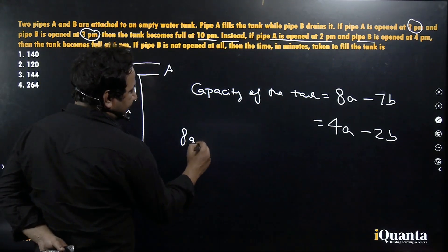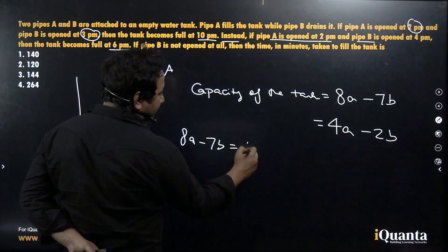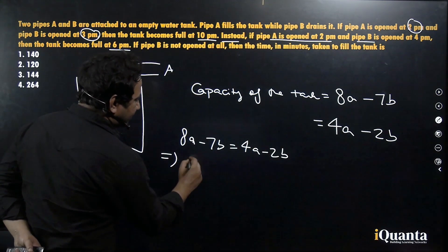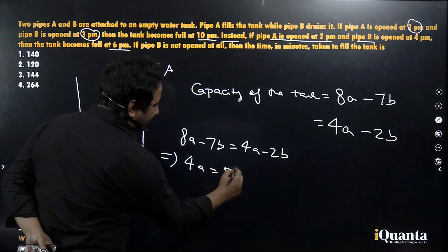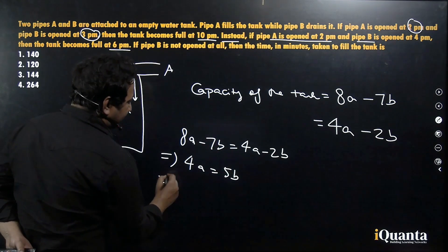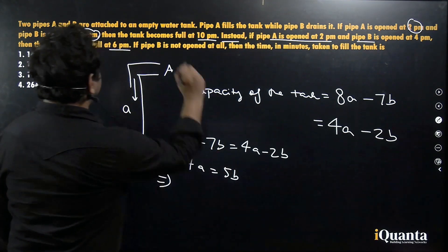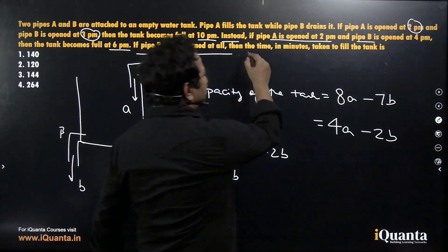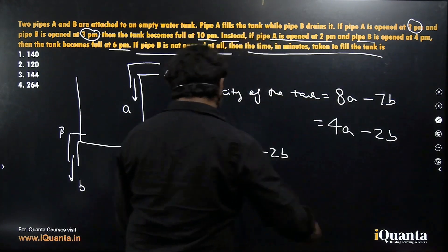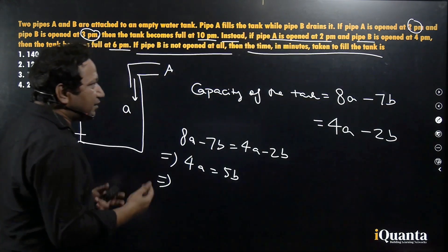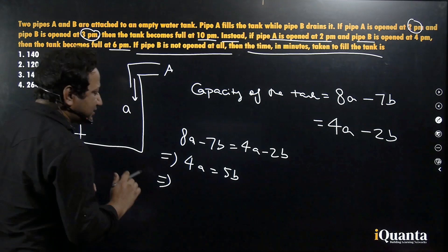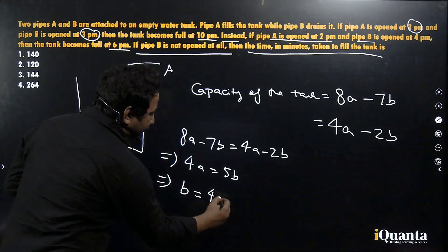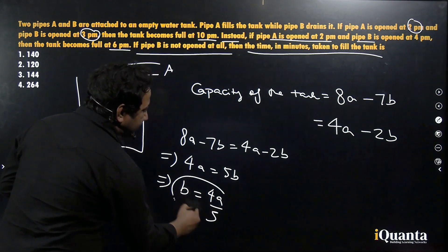Let us write 8A minus 7B is equal to 4A minus 2B. And if we solve it, we will get 4A is equal to 5B. Question talks about, if pipe B is not open at all, that means pipe B doesn't exist at all, then the time in minutes taken to fill the tank will be what? So we want only A to be functioning. So let us represent B in terms of A. We will get B is equal to 4A by 5.